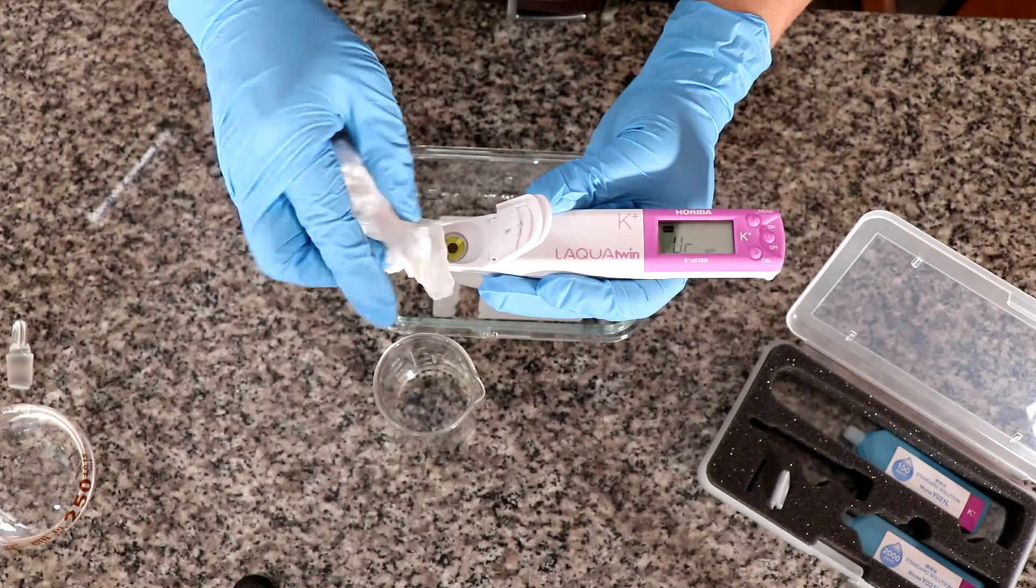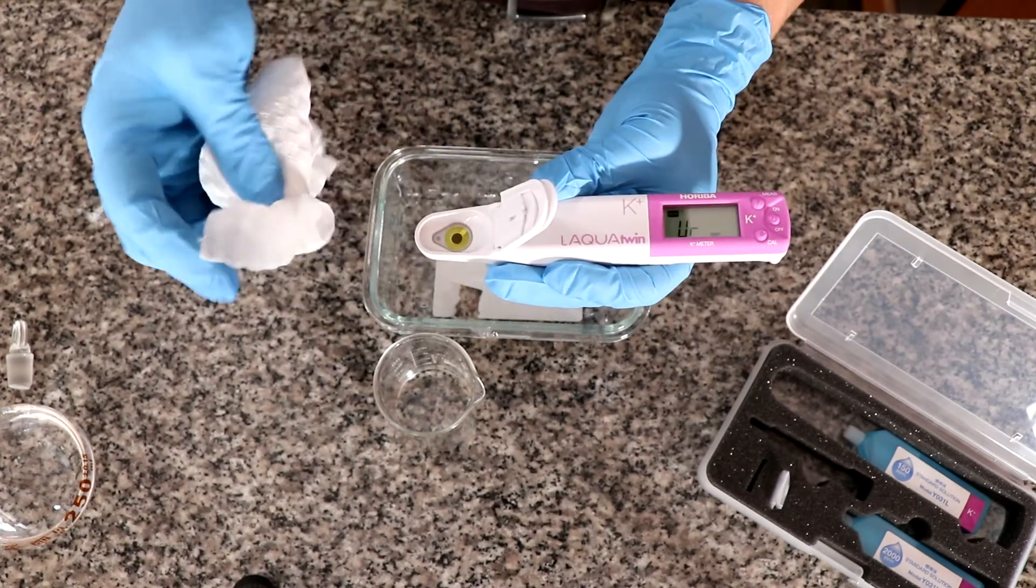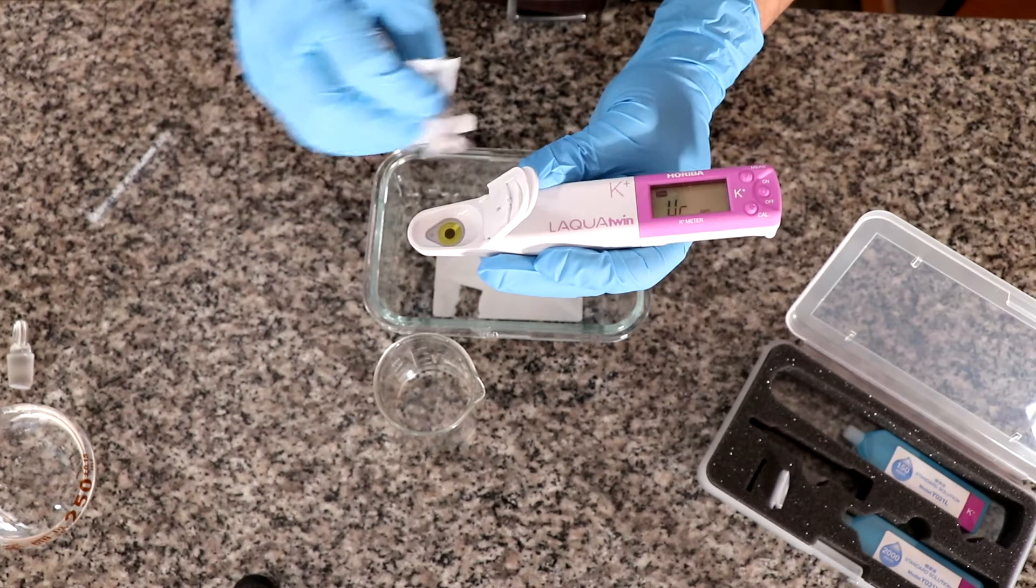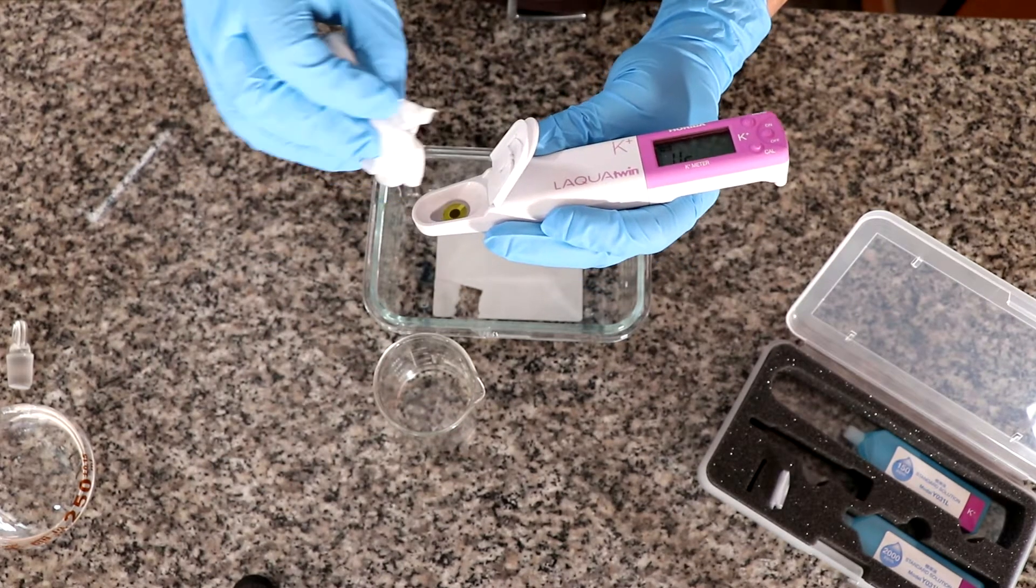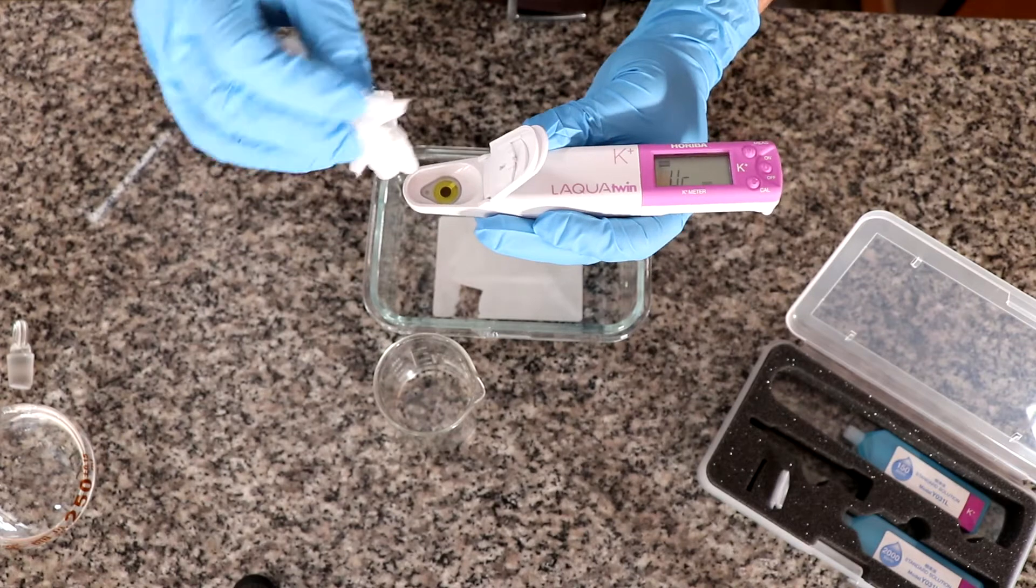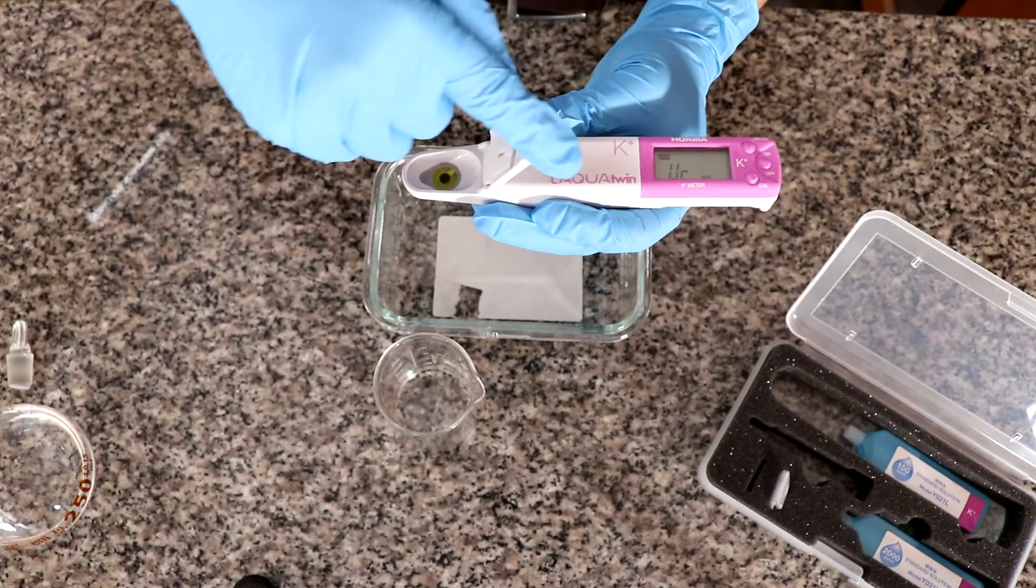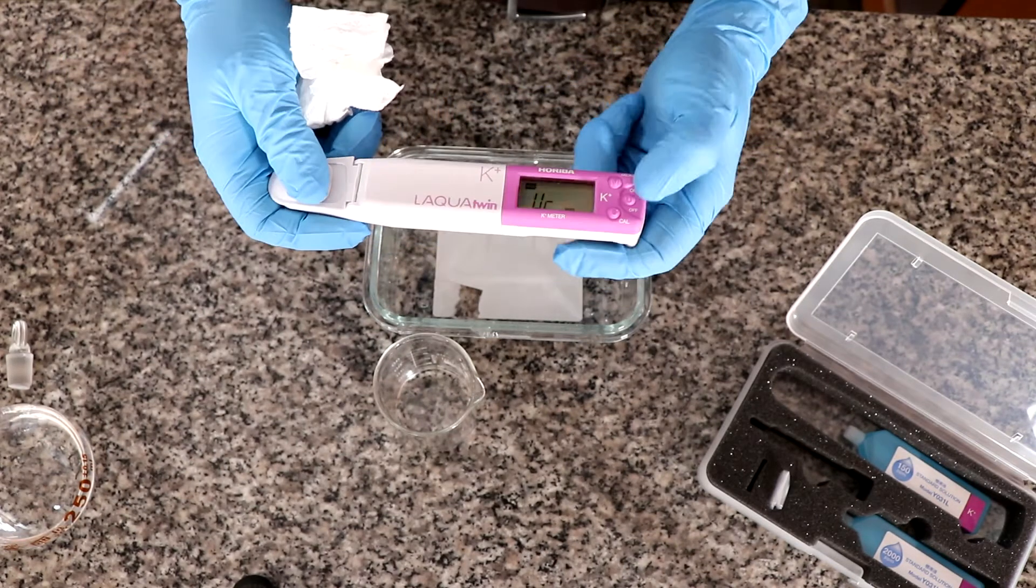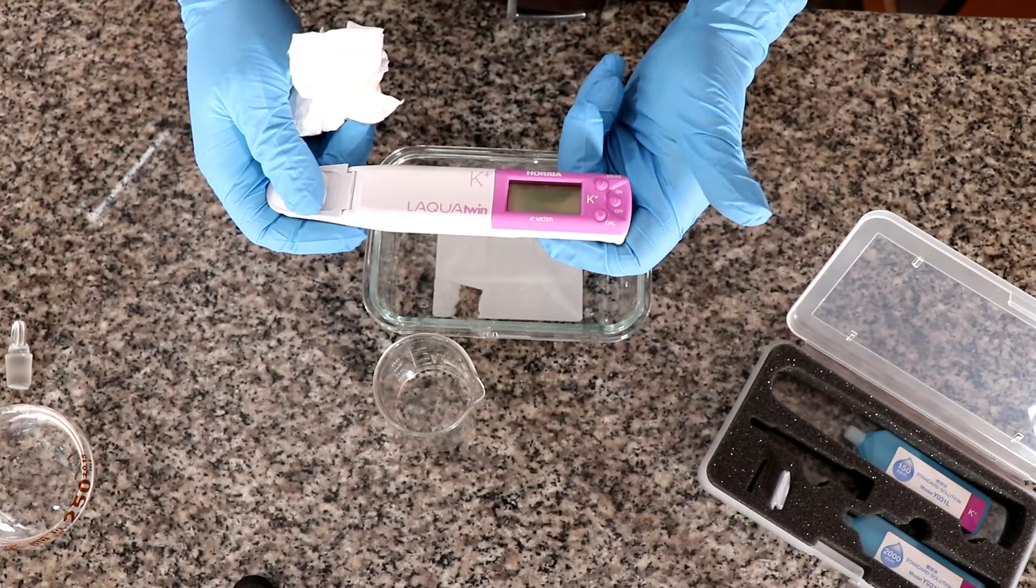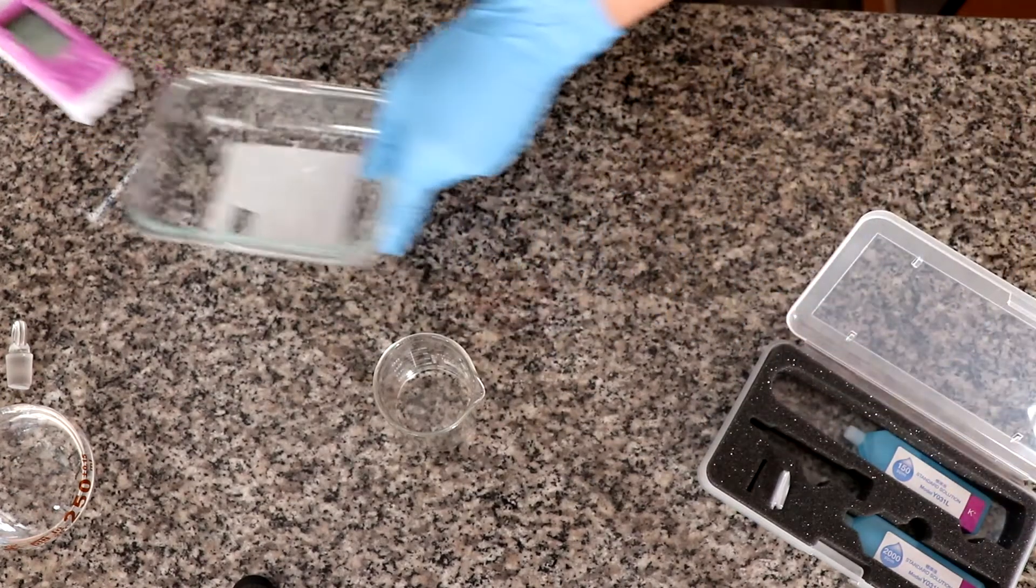So after finishing with your ion selective electrode measurement, you need to do the same thing. Wash with distilled water. These electrodes are supposed to be stored dry. So you want to tap this very gently. Close it. And then to turn it off, you just press the on off button. And that's it.